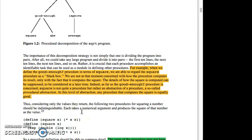The importance of this decomposition strategy is not simply that one is dividing the program into parts. After all, we could take any large program and divide it into parts—the first ten lines, the next ten lines, the next ten lines, and so on. Rather, it is crucial that each procedure accomplishes an identifiable task that can be used as a module in defining other procedures. For example, when we define good enough procedure in terms of square, we were able to regard the square procedure as a black box. We are not at the moment concerned with how the procedure computes the result, only with the fact it computes the square.